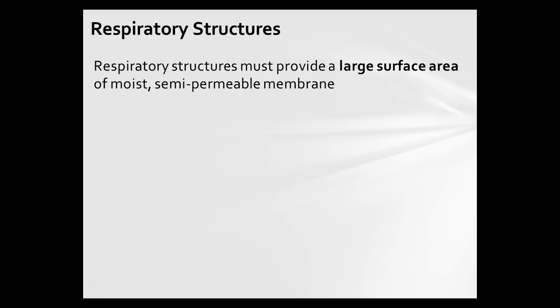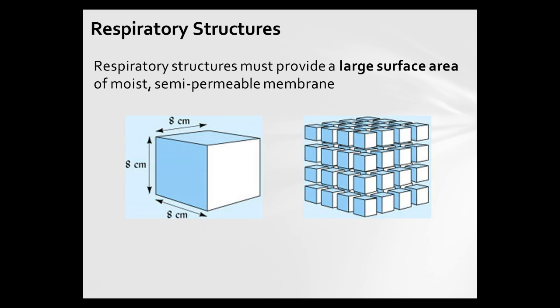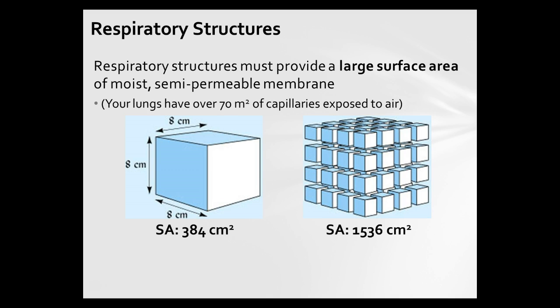Respiratory structures have to provide a large surface area of moist semi-permeable membrane, because it needs to be wet so that oxygen and carbon dioxide can diffuse through. Surface area matters — we've seen this before when talking about mitosis. Here we have a tube 8×8×8 with a surface area of 384, but when broken up into many smaller structures, that surface area is drastically increased. Your lungs have about 70 square meters of capillaries exposed to air — capillaries are those super tiny blood vessels — which is about a third of the size of a tennis court. That much surface area with every breath you take, unless of course you smoke, in which case that surface area starts decreasing.